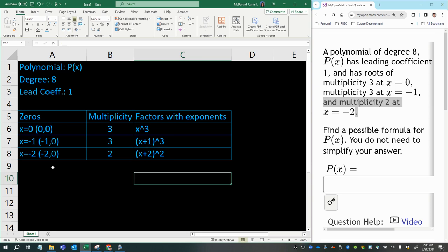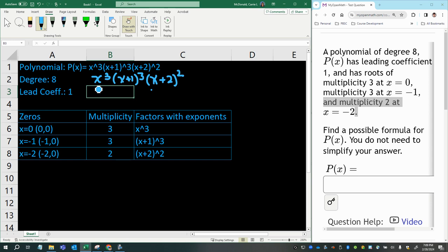Now with all of that, we can now put our polynomial together. And using the lead coefficient of one, we have one times x to the power of three, and I guess I don't need that there, one times x to the power of three, then times (x + 1) to the power of three, and then times (x + 2) to the power of two. And one times x cubed is just x cubed. So that would be my polynomial function P(x).